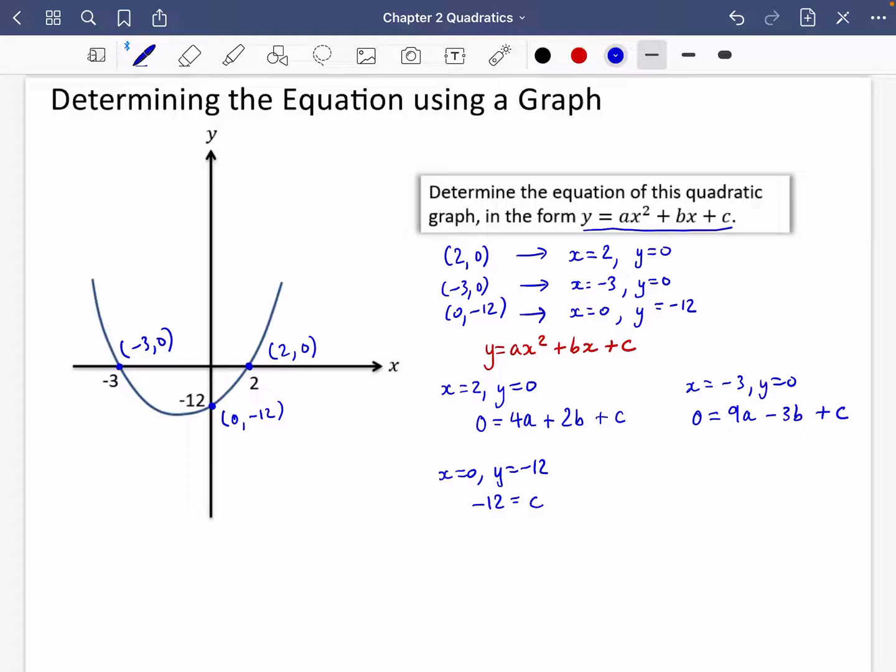Now I know that c is equal to minus 12. So I'm going to take number 1 and number 2 and reuse them. So that is 4a plus 2b minus 12 equals 0, and 9a minus 3b minus 12 equals 0. So 4a plus 2b equals 12 and 9a minus 3b equals 12. So you can see what I've got here: simultaneous equations.